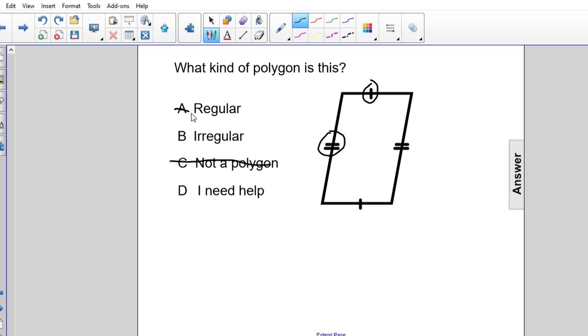So we can eliminate answer choice A, this is not a regular polygon, leaving us with answer choice B, this is an irregular polygon.